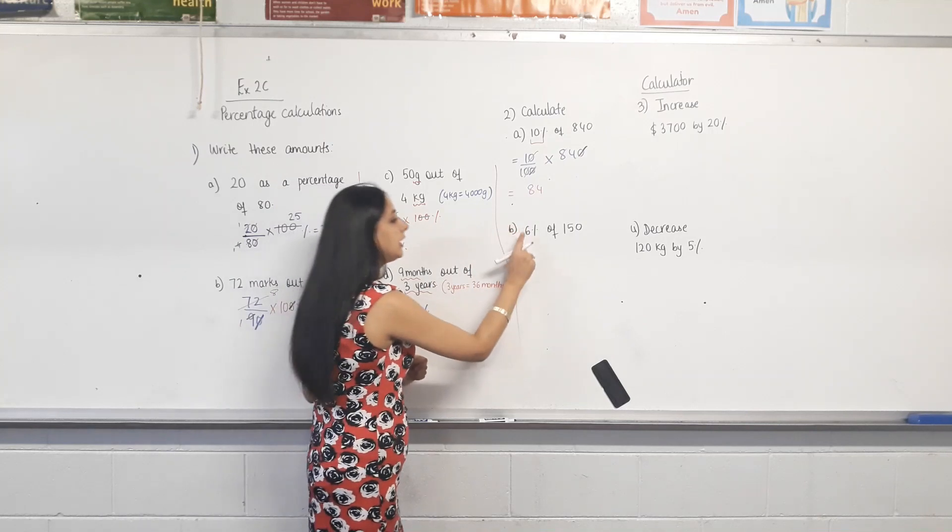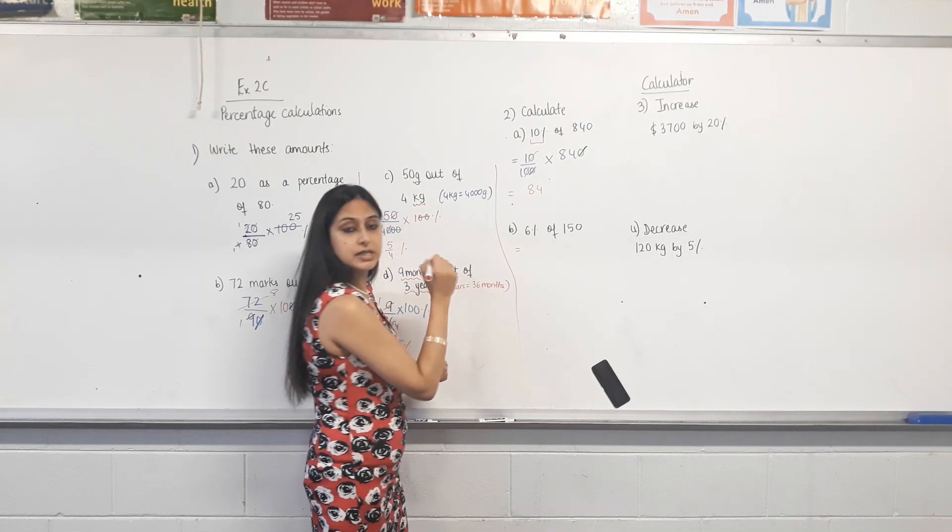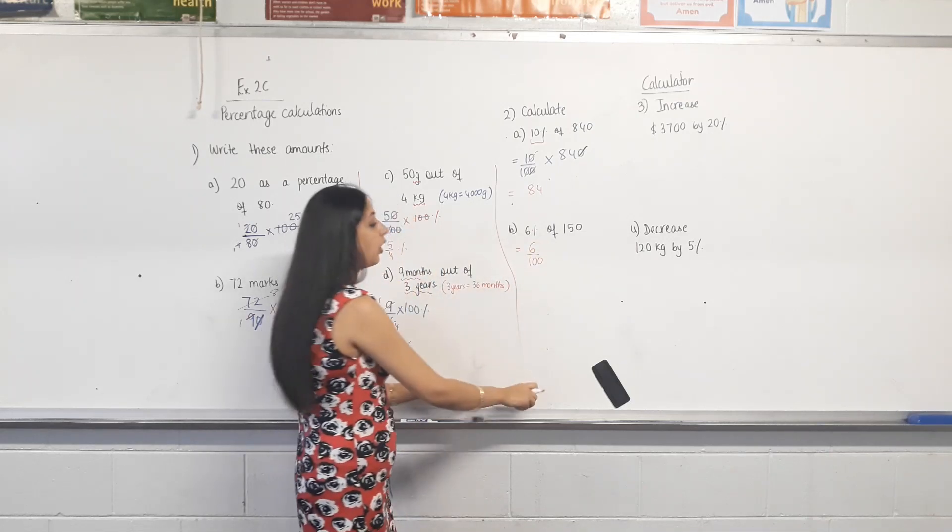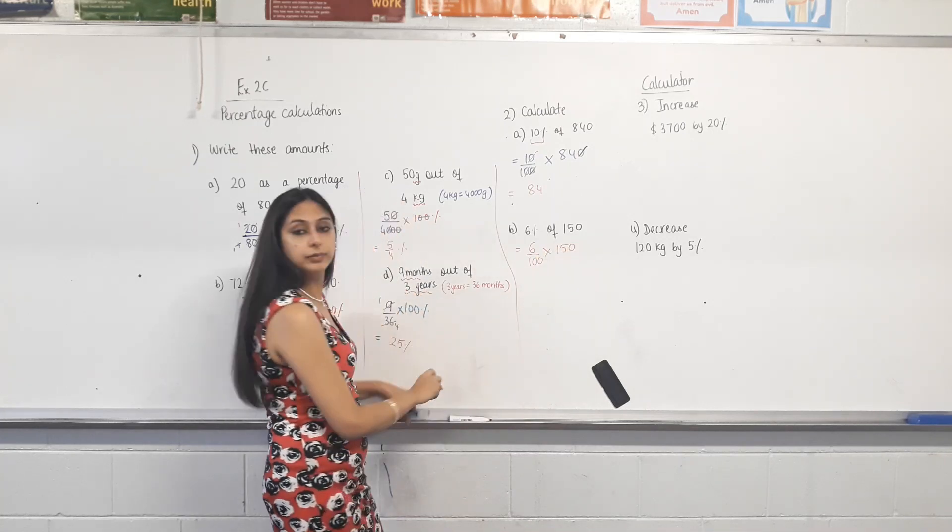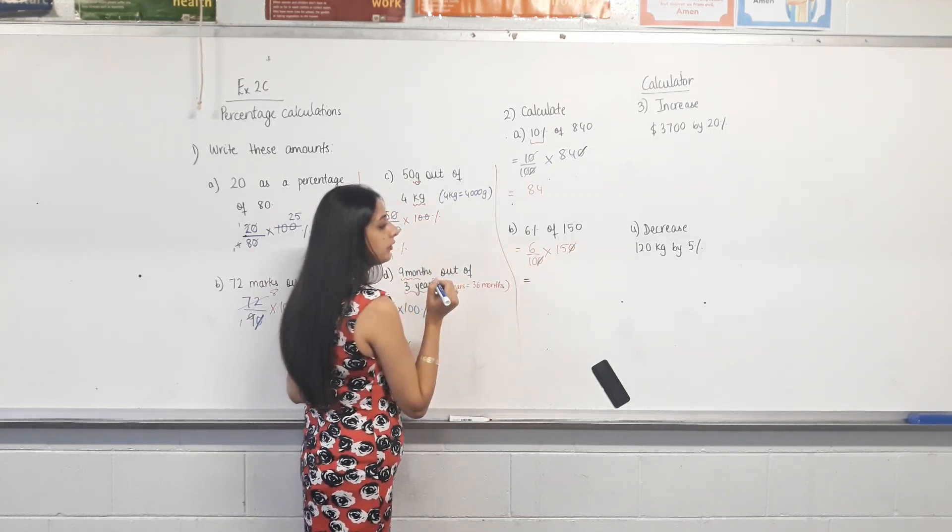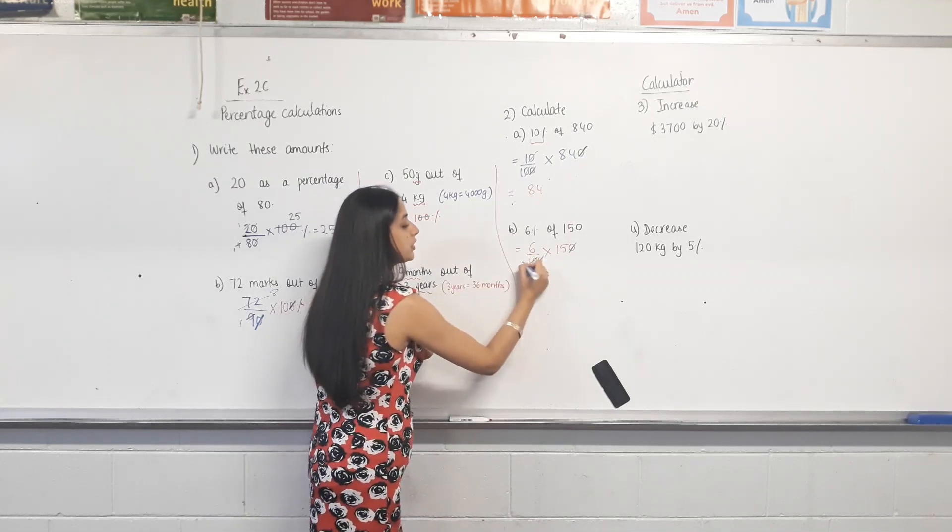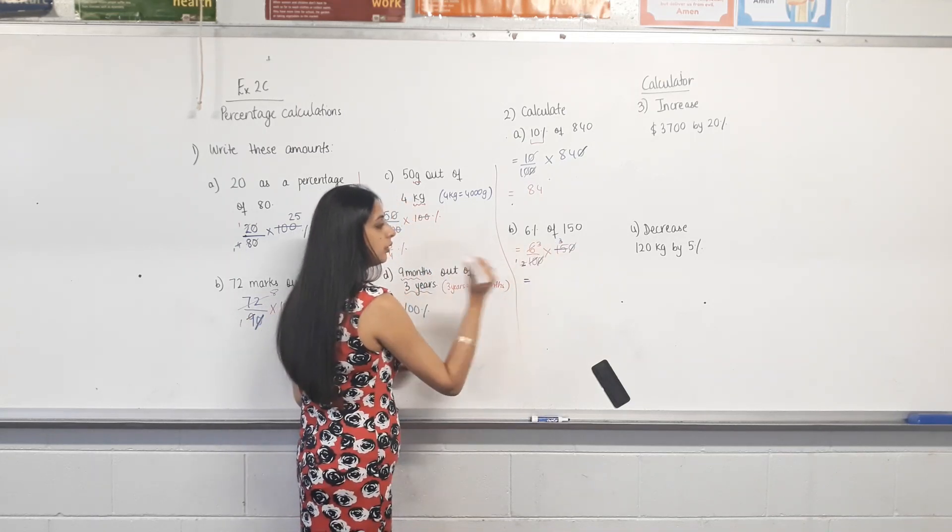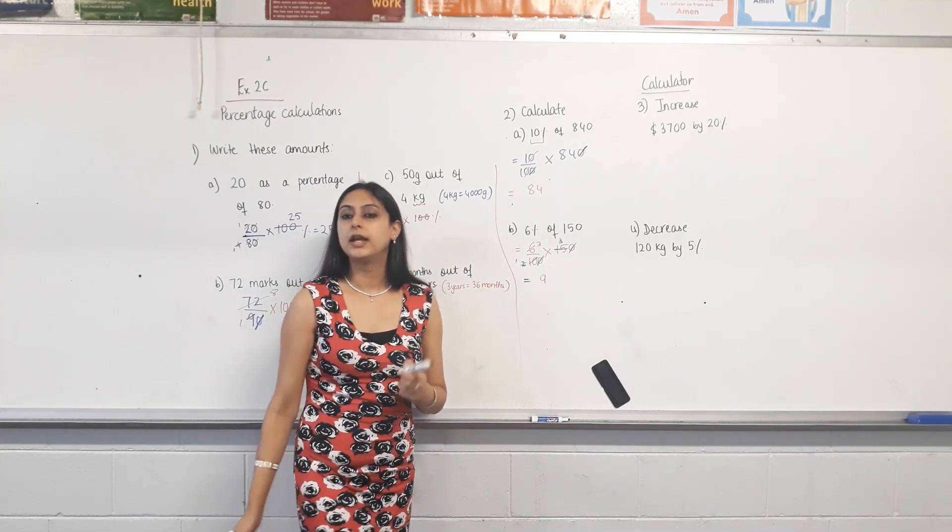So, look again. We're finding 6% of 140. First of all, convert 6% into a fraction. 6 over 100. Off. Replace the off by times. And now simplify. Dividing by 10. What's it? 10 and 15 are both divisible by 5. 5 goes into 10, 2 times. 15, 3 times. 2 and 6 can be divided by 2. What are you left with? 9. Make sense?